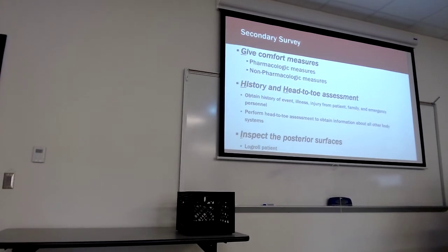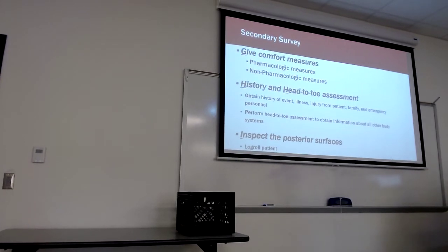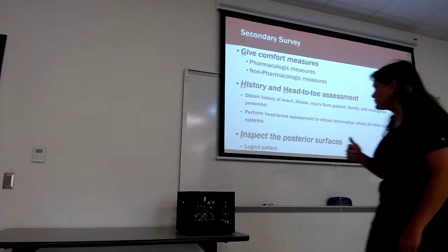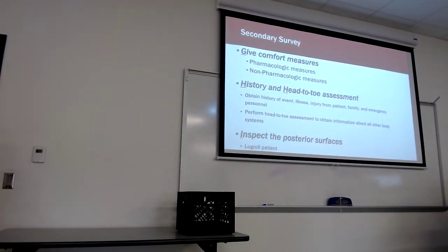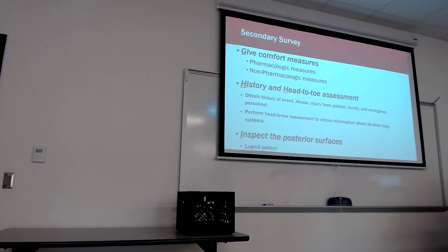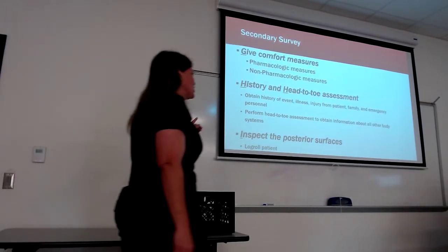This is where we go back and fill in the holes — grip strength, capillary refills, bowel sounds, depending on what's going on with the patient. Then we inspect the posterior side. We'll talk more about this with abdominal traumas because the lateral and posterior sides of the patient can tell us a lot about what's going on in the abdomen. If the spine hasn't been cleared, we log roll the patient for the posterior inspection.